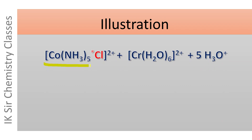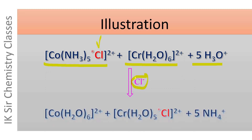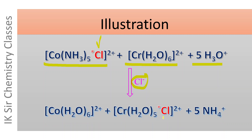To illustrate: [Co(NH3)5Cl]2+, which contains the labelled radioactive chloride ion, is treated with [Cr(H2O)6]2+ in acidic medium. The reaction medium also contains unlabelled, that is normal, chloride ion. In the product [Cr(H2O)5Cl]2+, only the labelled chloride ion is present, and the normal chloride ion from the reaction medium does not appear in the product.